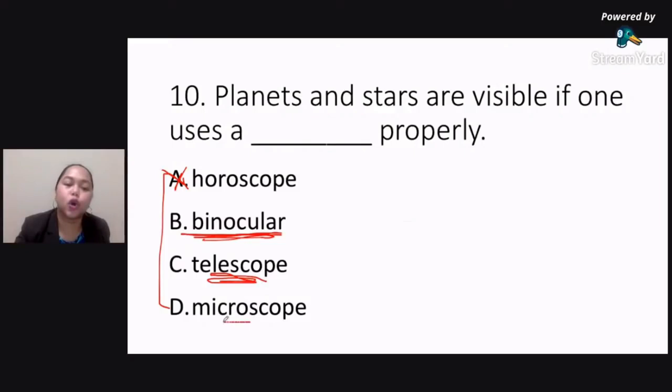Now, letter D naman microscope, this is what we use if you want to see the structures of a microscopic organism or object. So, if there is something that is too small for the naked eye to see, then we use our microscope. The correct answer here, of course, would be letter C, telescope.